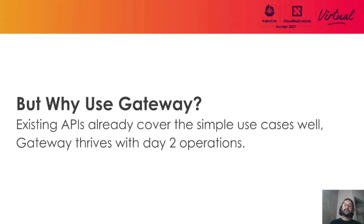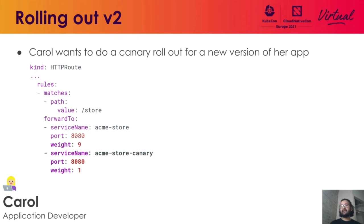You might ask: this was already possible with Ingress — why should we use Gateway API, which seems a little more complicated? The answer is that Gateway API really shines with day-two operations. For example, Carol wants to do a canary rollout of a new version of her application. She'll add a new forwarding target and forward one in every 10 requests — about 10% of traffic — to the acme-store canary application. As she gains confidence in the new version, more traffic can be shifted from the old version to the new version. Notice how she can do this without interacting with any of the gateway or class admins.